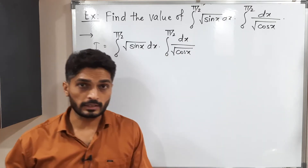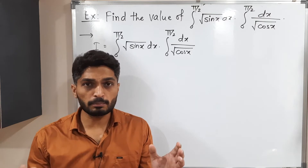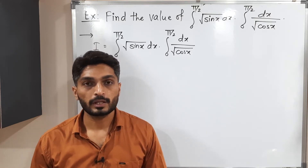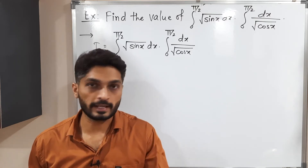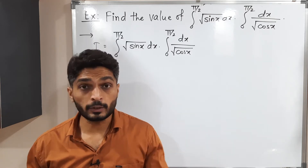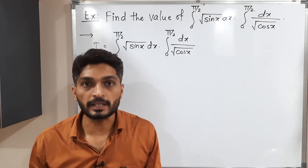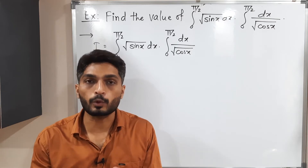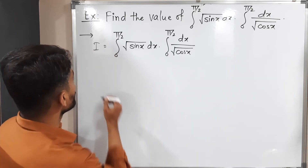So actually the given integral is a product of two integrations. So what will I do? The first one I will call it as I1, and the second one I will call it as I2. We will solve them separately and at the end we will take the product of both integrals.